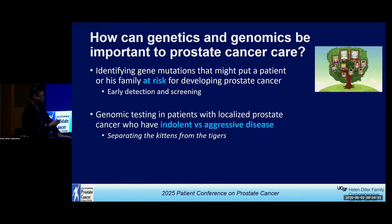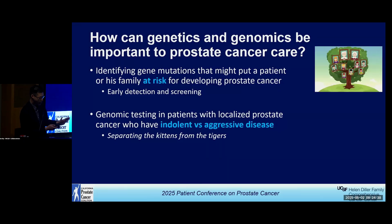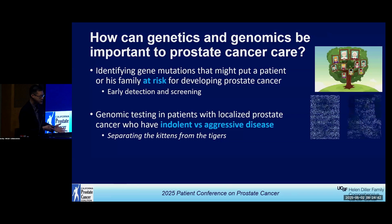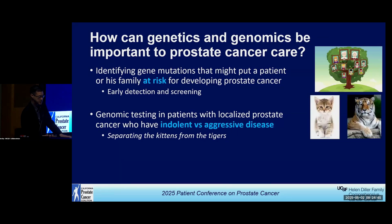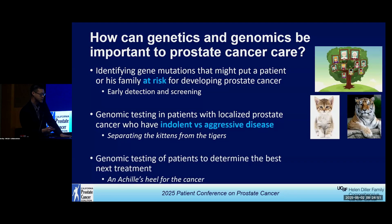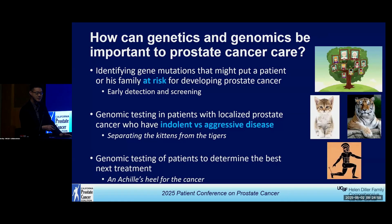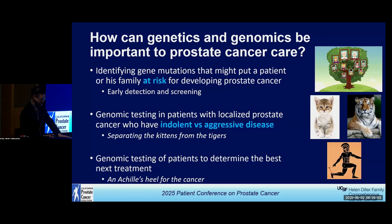The second thing — Dr. Cooperberg talked a bit about this using different analogies, rabbits and the turtle — but I'll use separating the lions from the kittens: thinking about people who have indolent disease versus those who have more aggressive disease biology. And the last is thinking about how we use this information to tailor our treatments — is there an Achilles heel in those mutations that we can target?